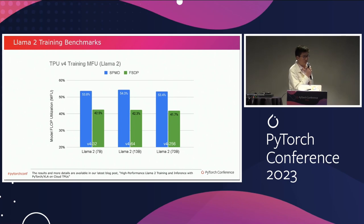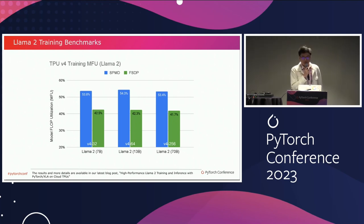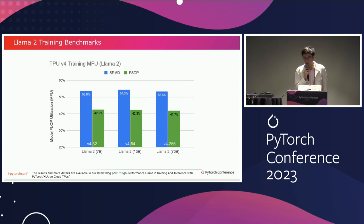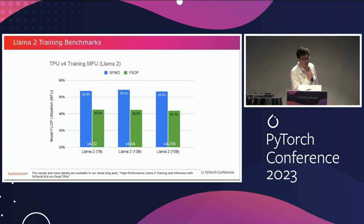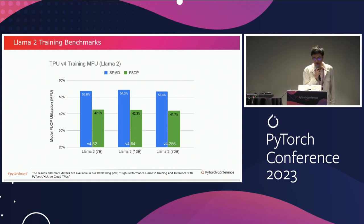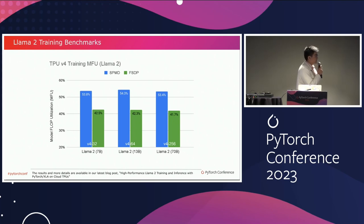Hello, this is Jay Wen from the PyTorchXLA team at Google. Thanks, Yano, for the great introduction of the SPMD API. Here I want to show you some of the great LLAMA 2 training results we've produced using the API. We benchmarked all LLAMA 2 models from 7 billion to 70 billion parameters, using model FLOP utilization as our metric. This chart shows two things: first, we compare our SPMD results (blue bars) with our FSDP results (green bars). FSDP is one of the most popular distributed algorithms in the PyTorch ecosystem, and SPMD has gained us a whopping 28 percentage point performance improvement across the board. Second, we scale almost linearly with model size, maintaining around 55% MFU from the smallest 7B model to the largest 70B model.